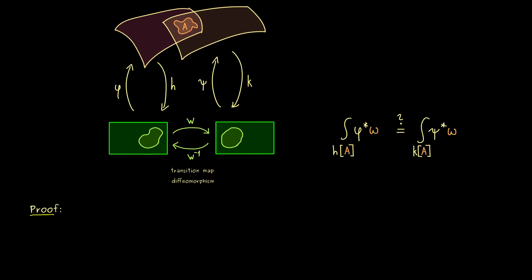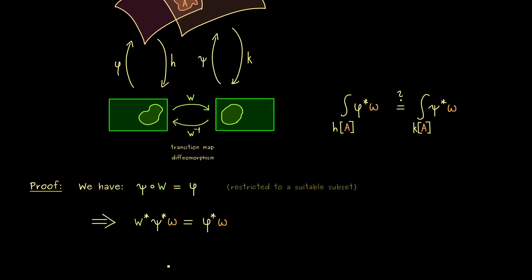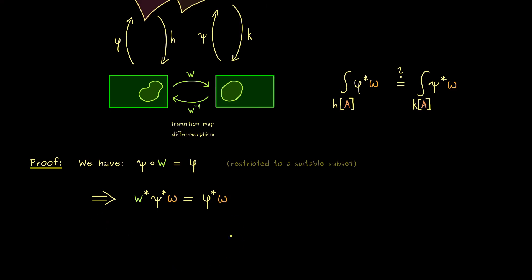The rest of the video is about this proof. All the compositions for the maps we see in the picture: first applying w and then applying psi is the same as just applying the parameterization phi — of course this only works on the intersection, but we are interested in set A anyway. This equality implies another equality for the pullback volume measures: the pullbacks are the same, but for the composition the order changes. This is easy to check — it holds by the definition of the pullback. Let's call this volume measure on R^n omega tilde.